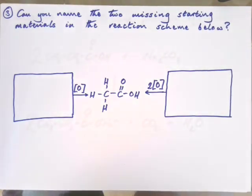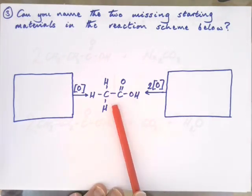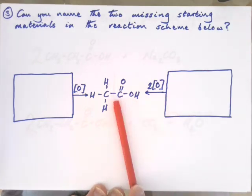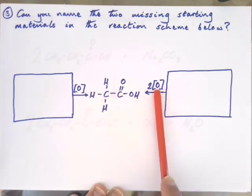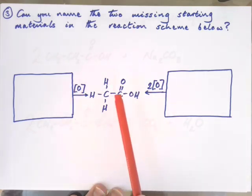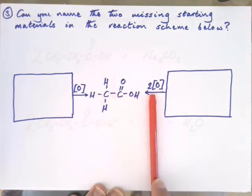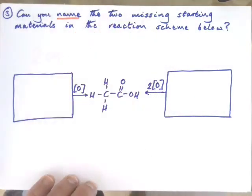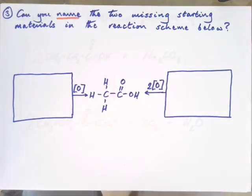Question number three. Can you name the two missing starting materials in the reaction shown below? We have ethanoic acid here, and the arrows indicate oxidation processes. You can oxidise something to become ethanoic acid via one route, or via another route. One route requires twice as much oxidation as the other. Can you think what those two starting materials would be? Pause the video, check your poster, and see if you can identify them.